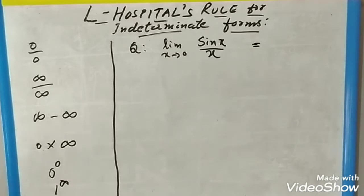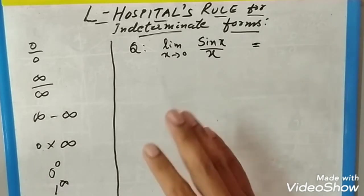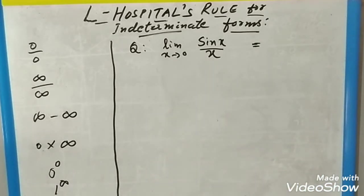Hello students, today's topic is L'Hospital's rule for indeterminate forms. First, we should know what an indeterminate form is—it is a form in which you are not knowing the definite values or cannot determine the value of the equation.